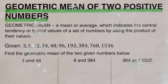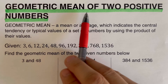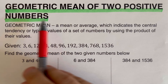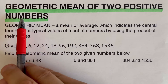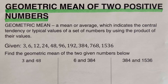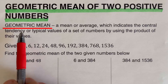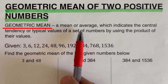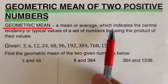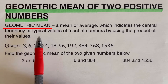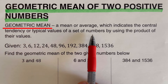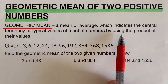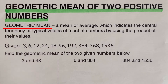Hello everyone. In this video we are going to determine the geometric mean of two positive numbers. Geometric mean is a mean or average which indicates the central tendency or typical values of a set of numbers by using the product of their values.